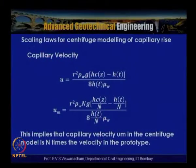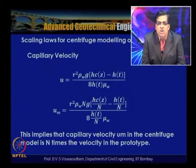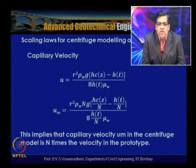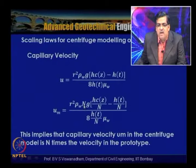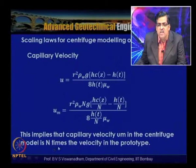Now let us look at capillary velocity. From u = r²ρwg(hcz − ht)/(8ht·μw), writing um for the model with ng gravity and heights reduced by 1/n, comparing model and prototype expressions shows that the capillary velocity um in the centrifuge model is n times the velocity in the prototype: um = n·up.